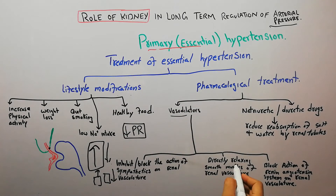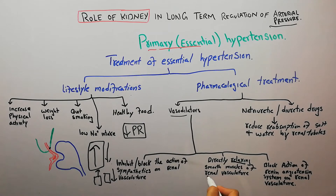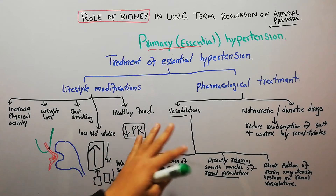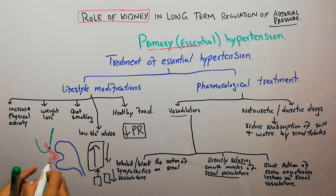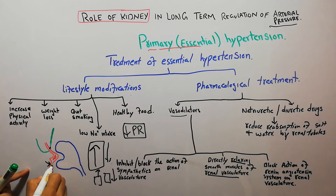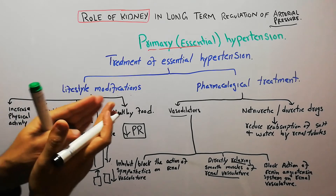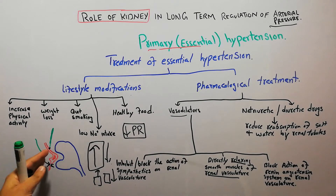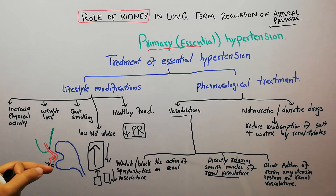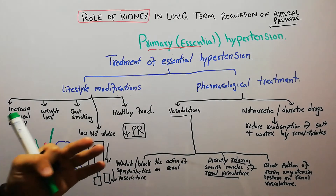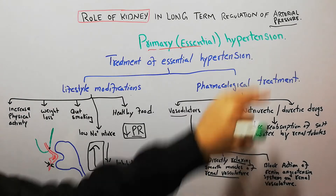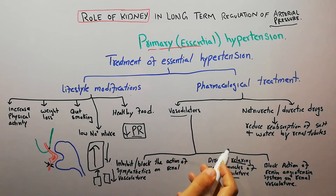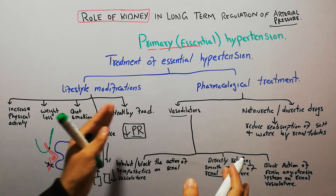Vasodilator drugs may also directly relax the smooth muscles of the renal vasculature. Some of these drugs act directly on the blood vessels to relax them. When they relax, peripheral resistance falls, there is less accumulation of fluid and salt in the body, and there is a fall in arterial pressure or blood pressure, which is beneficial in the treatment of hypertension.